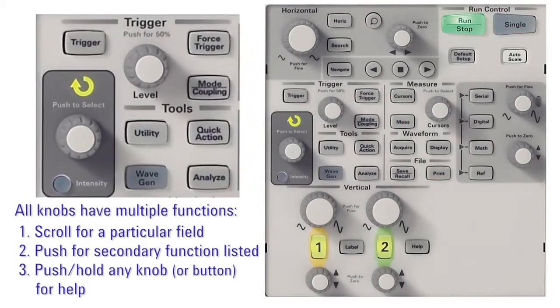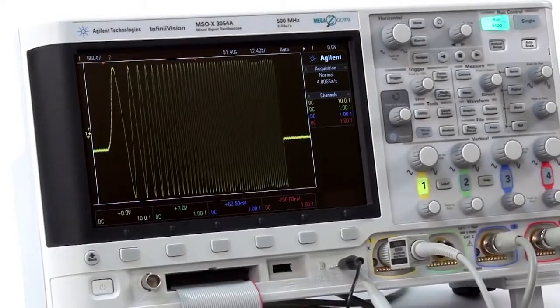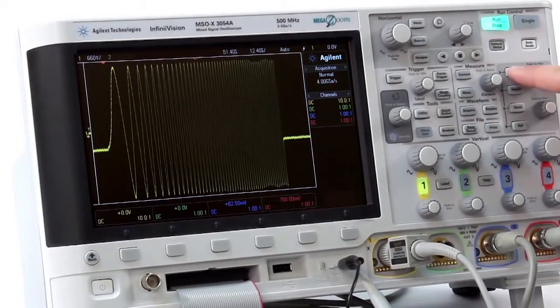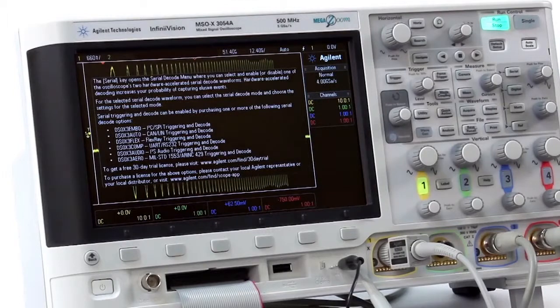In fact, all knobs have a second function when pressed. Text below the knob tells you what the secondary function is. Finally, to learn more about any knob, button, or soft key, simply press and hold for two seconds to access built-in help information.